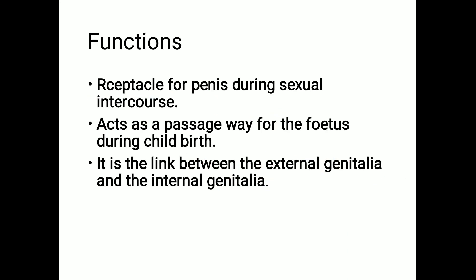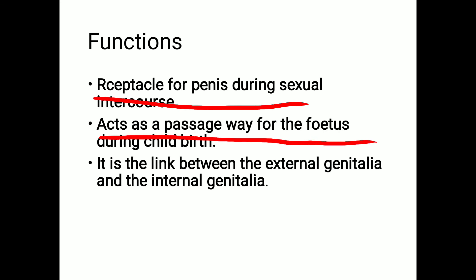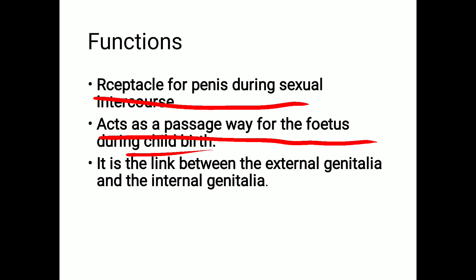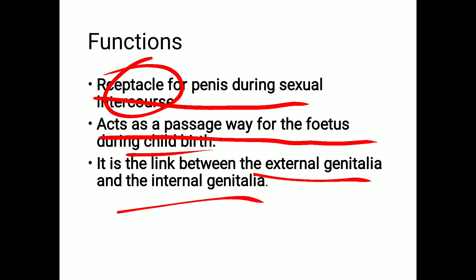The functions of the vagina: first, it is a receptacle for the penis during sexual intercourse. Second, it acts as a passageway for the fetus during childbirth — the fetus passes from the uterus through the vagina to the exterior. It also serves as the connecting link between the external and internal genitalia.